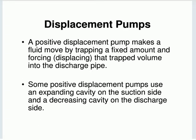A positive displacement pump makes fluid move by trapping a fixed amount and forcing - displacing - that trapped volume into the discharge pipe. Some use an expanding cavity on the suction side and a decreasing cavity on the discharge side. Think of it like an engine: in your car a piston goes up and down. The burnt gases are pushed out, fresh fuel-air mixture is sucked in, combustion occurs and it's pushed out again - that four-stroke system is a very similar concept.